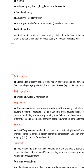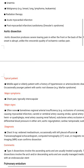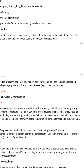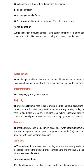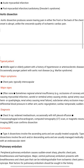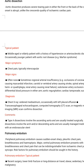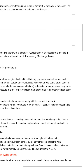Typical patient: middle-aged or elderly patient with a history of hypertension or arteriosclerotic disease, occasionally a younger patient with aortic root disease. The major symptom is chest pain, typically inter-scapular. Major signs are often none, but sometimes regional arterial insufficiency is present.